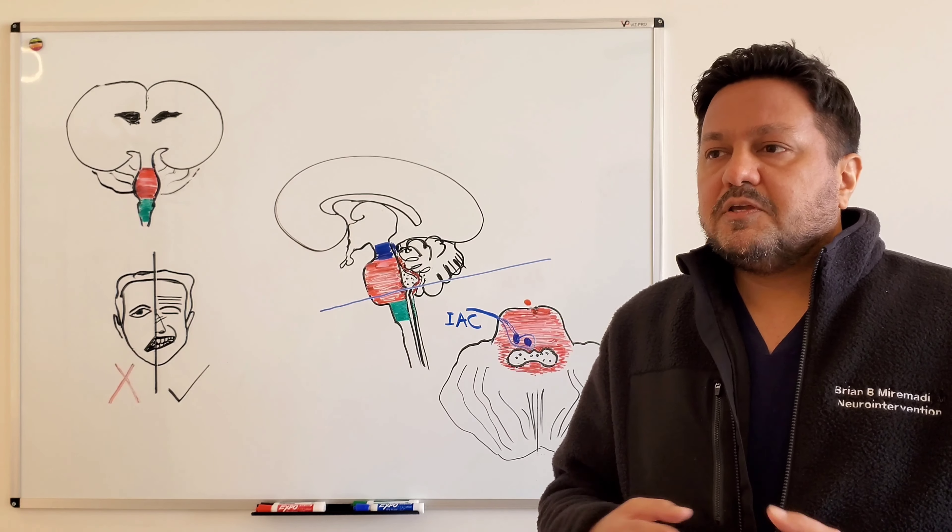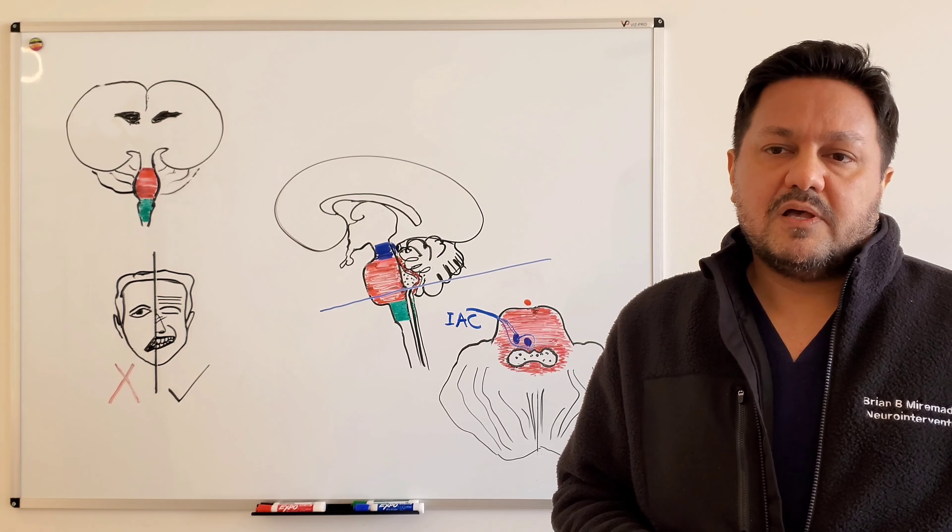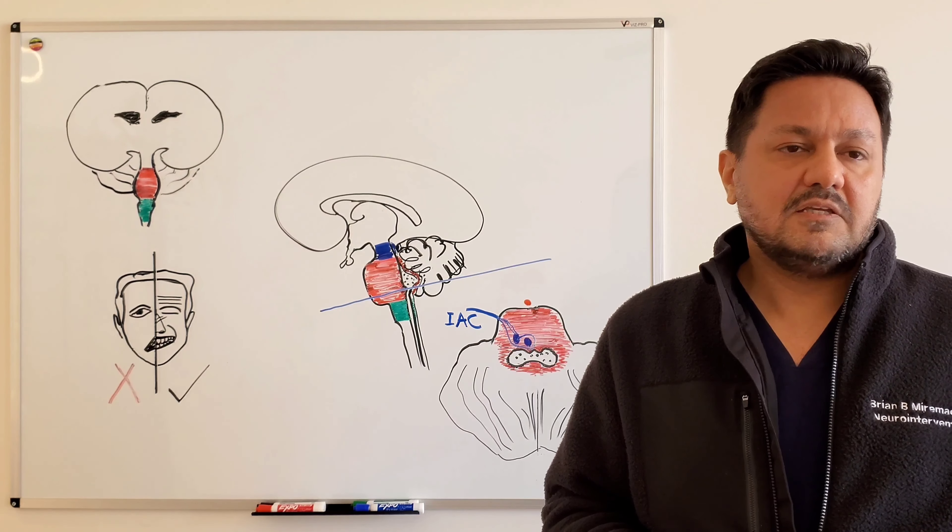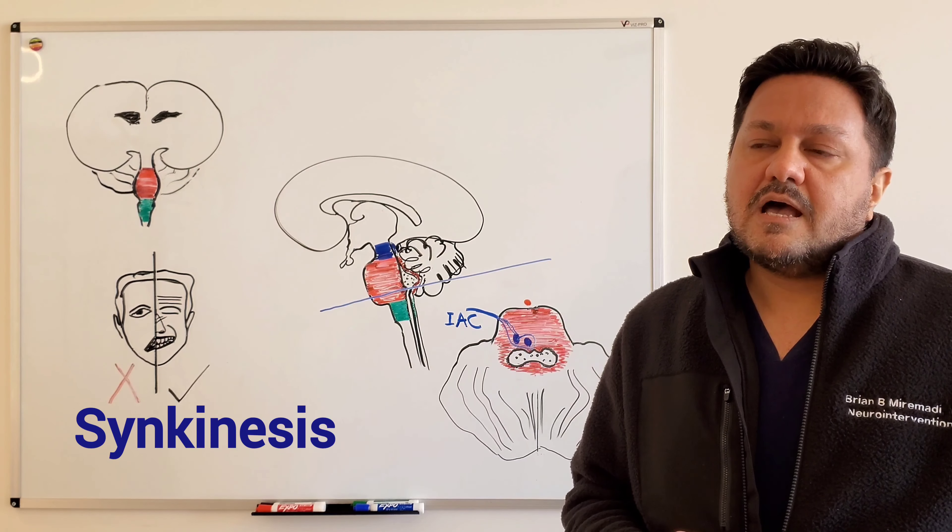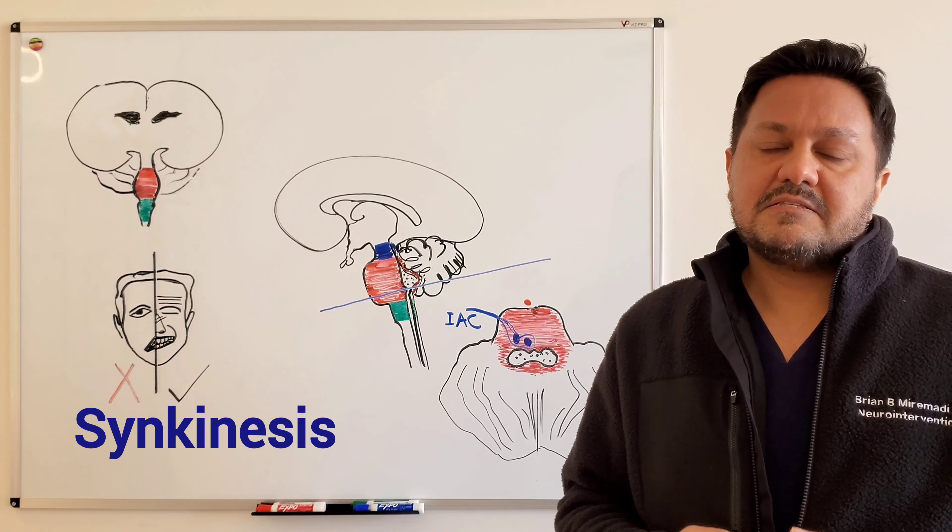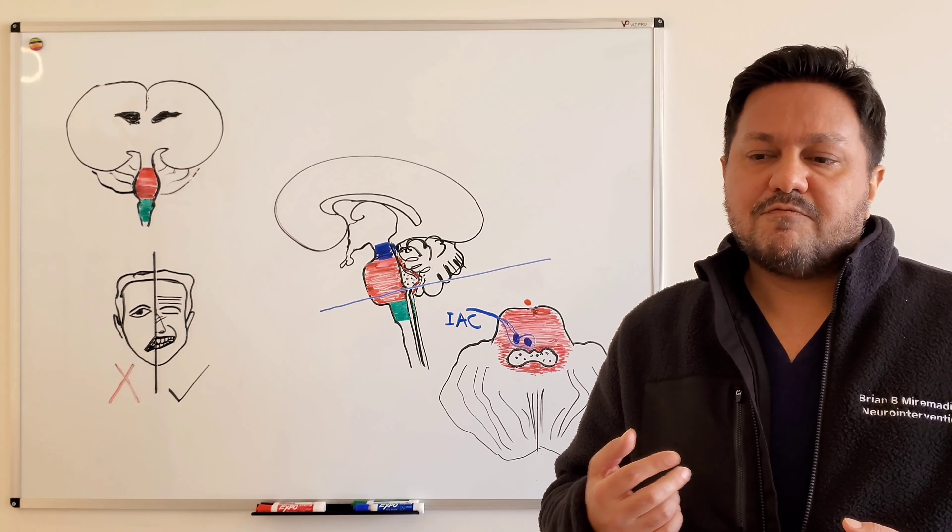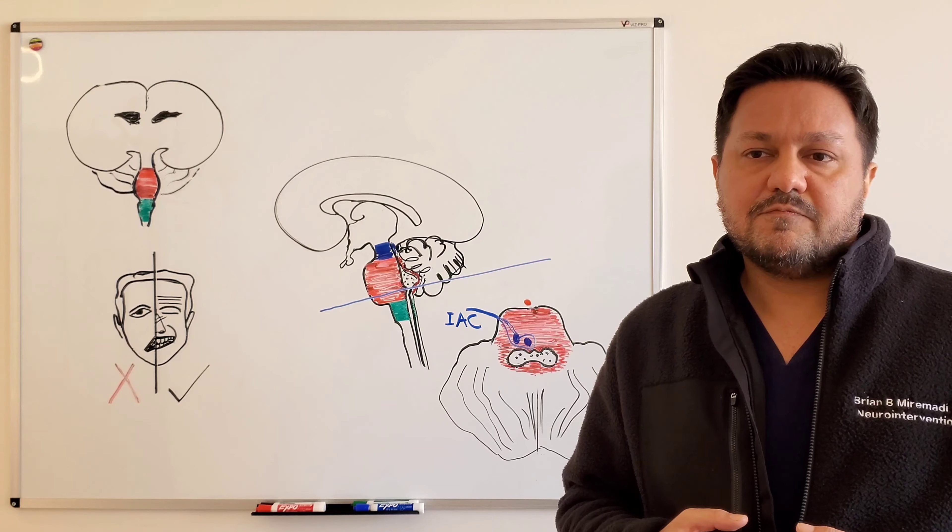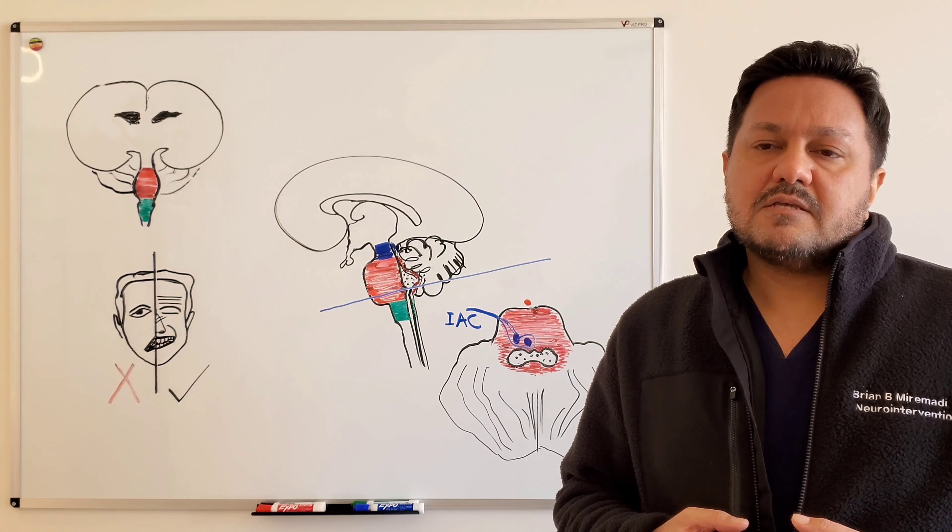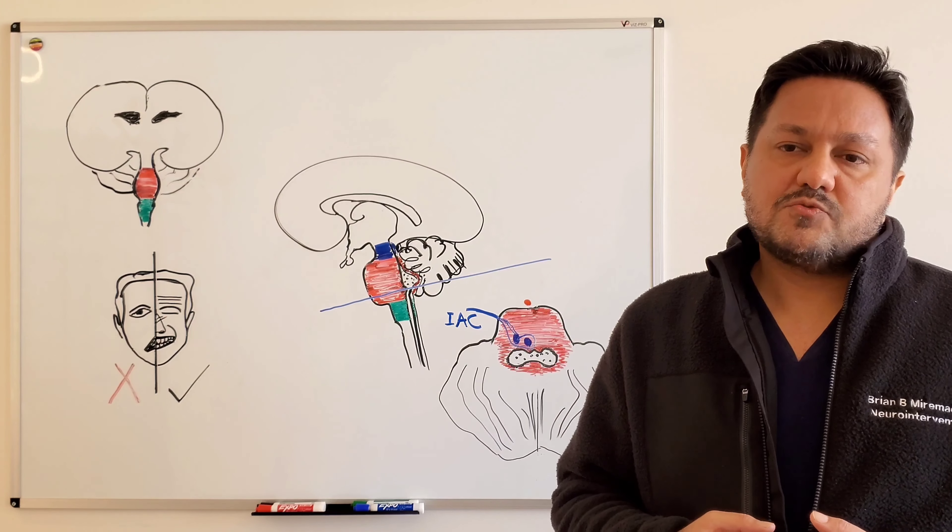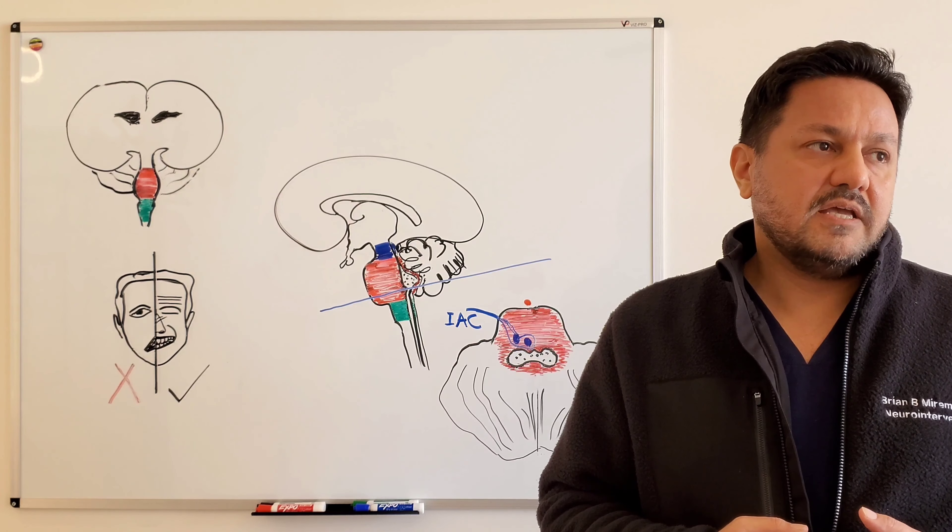Another complication, a chronic complication of Bell's palsy or facial nerve palsy, is synkinesis. As you remember, that's typically a malfunction of the regenerated fibers of the facial nerve.